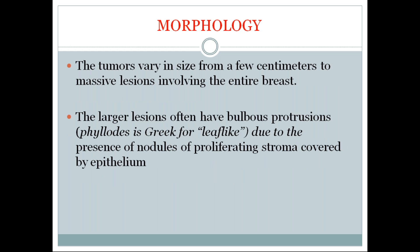Coming to morphology, the tumors vary in size from a few centimeters to massive lesions involving the entire breast. The larger lesions often have bulbous protrusions — phyllodes is a Greek word for leaf-like. This leaf-like pattern is seen due to the presence of nodules of proliferating stroma covered by epithelium. The intralobular stroma proliferates to form these leaf-like bulbous protrusions.